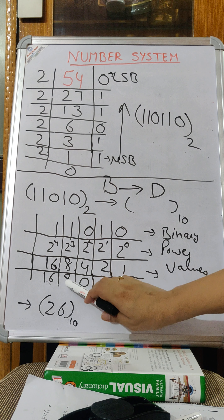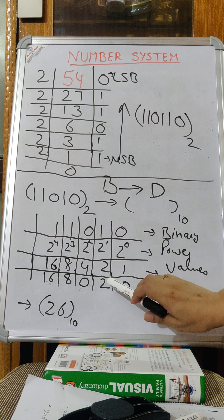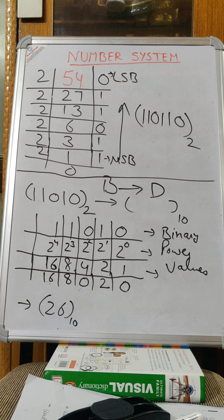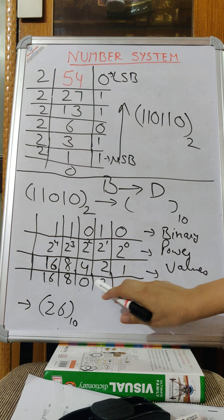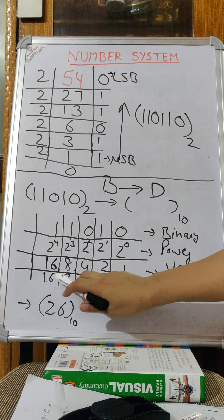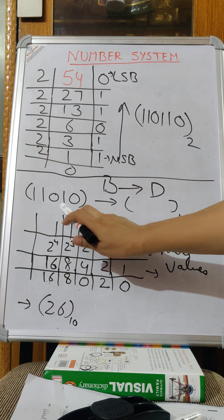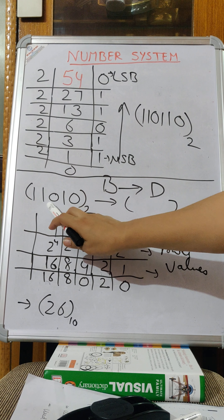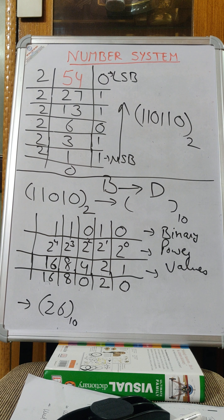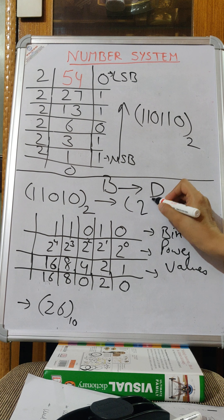16 plus 8 plus 2 equals — 8 plus 2 is 10, and 10 plus 16 is 26. So you will get 26 decimal after converting 1 1 0 1 0 binary. The answer is 26. You can write 26 as the decimal equivalent.